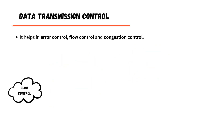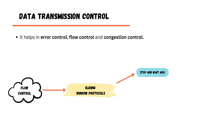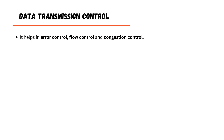In flow control, the transport layer provides a means for the receiver to track and restrict the amount of data a sender can send. There are flow control protocols used for this purpose, including sliding window protocols such as Stop-and-Wait ARQ, Go-Back-N ARQ, and Selective Repeat ARQ.